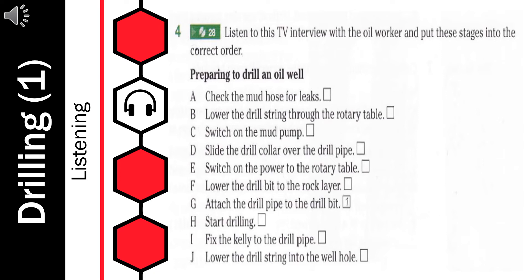Then we started drilling. I slowly tripped in to the rock — tripped in means lowered the drill string into the well. So I tripped in, or lowered the drill bit, to the rock below the platform. And that's how the drilling on the first well was begun. About 50 meters have been drilled so far. Well, thanks for talking to us. My pleasure.